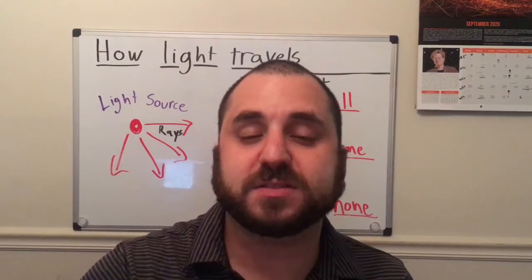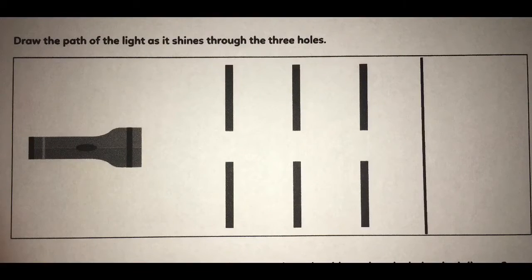All right and next on that same whiteboard can you draw a picture of what the path of the light looked like as it was going through the three pieces of cardboard with the holes in the way? Did it look the same? Did it look different? I wonder why?